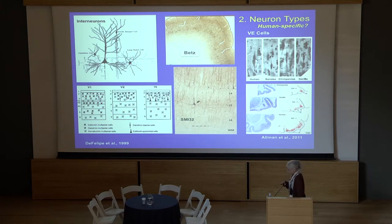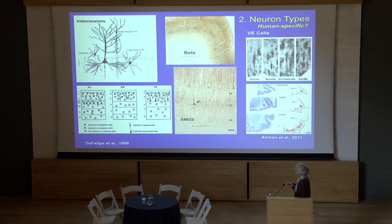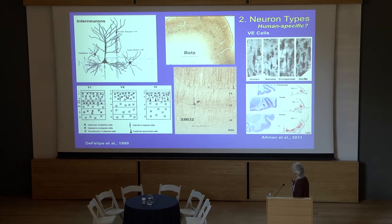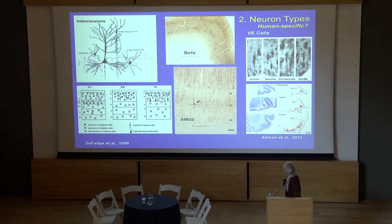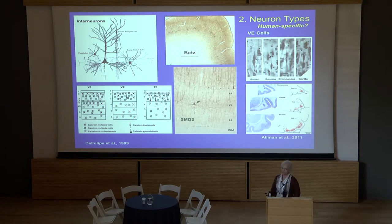Number two: neuron types. We've already heard that so far, given the amount of work, it's probably unlikely to expect human-specific types of neurons — this is based on morphology. There was good deal of excitement a few years ago on the spindle cells or von Economo cells, which are very thin and seem to have certain predominance in humans, although also appearing in bonobos and chimpanzees. But since then, these neurons have also been found in many other species, including non-primates.